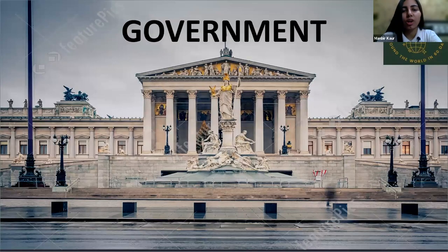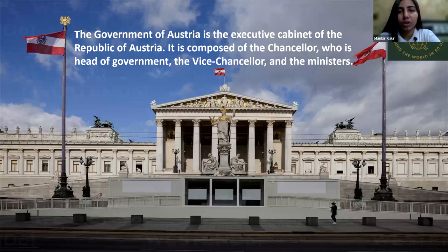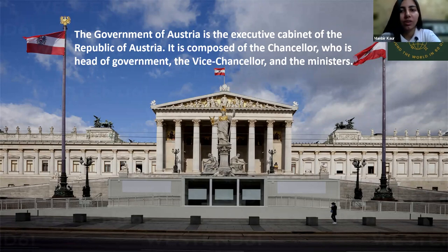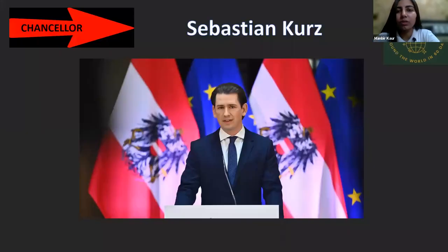The government of Austria is the executive cabinet of the Republic of Austria. It is composed of the Chancellor, who is the head of the government, the Vice Chancellor, and the ministers. The Chancellor of Austria is Sebastian Kurz.